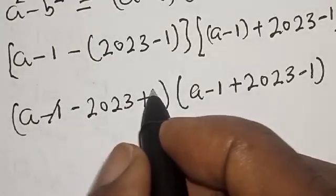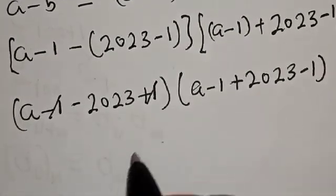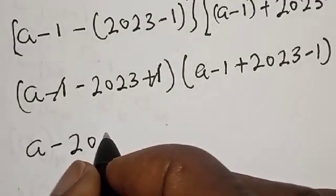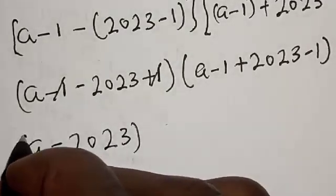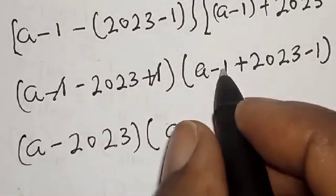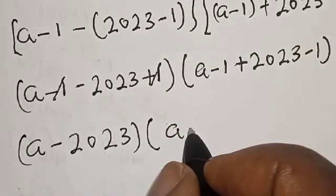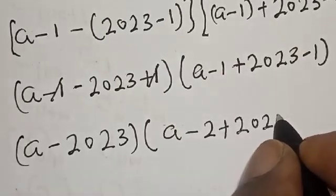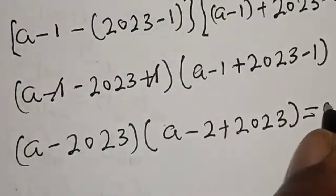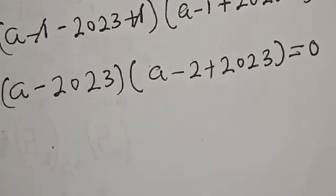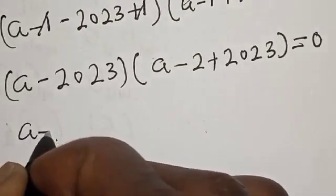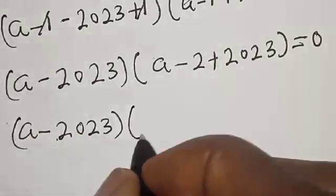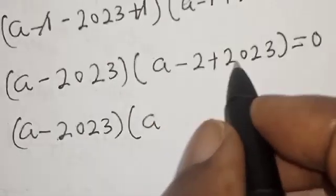This gives us (a-2023) multiplied by (a-2+2023). Now we have (a-2023) multiplied by (a-2+2023).